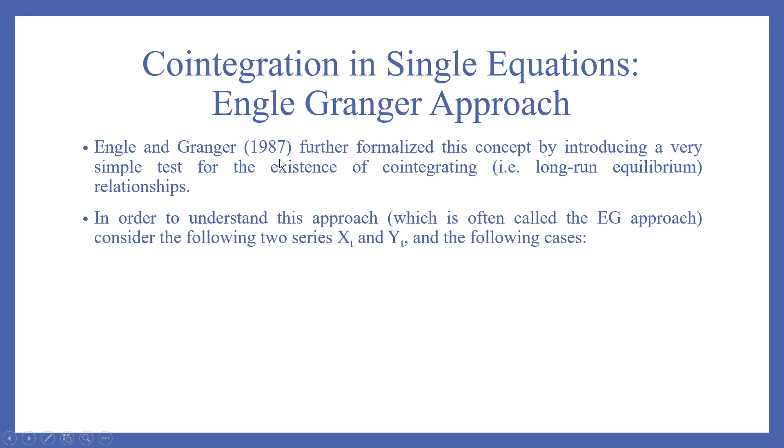Engle and Granger, 1987, further formalized this concept by introducing a very simple test for the existence of cointegrating, that is long run equilibrium relationships. In order to understand this approach, which is often called the EG approach, consider the following two series, XT and YT and the following cases.